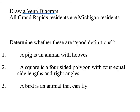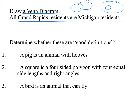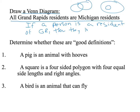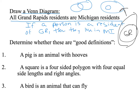Next: draw a Venn diagram. Venn diagrams show relationships between things. All Grand Rapids residents are Michigan residents — write it as a conditional: if a person is a resident of Grand Rapids, then they live in Michigan. The Venn diagram shows a circle for Grand Rapids inside a larger region for Michigan, meaning everybody that lives in Grand Rapids lives in Michigan.